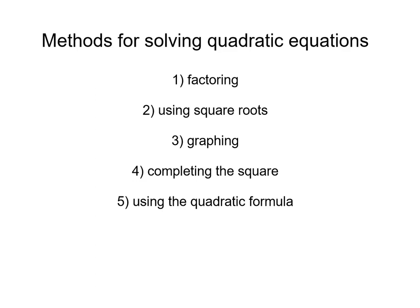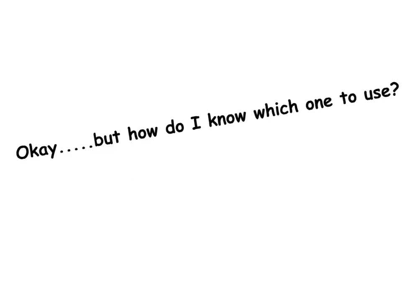Okay, so these are the methods we've talked about: factoring, using square roots, graphing, completing the square, and using the quadratic formula. The question is, how do I know which one to use? You want to choose the one that's most efficient for the way the problem is set up. So we're going to talk about the different ways problems can be set up and how that guides you into what method you should use.